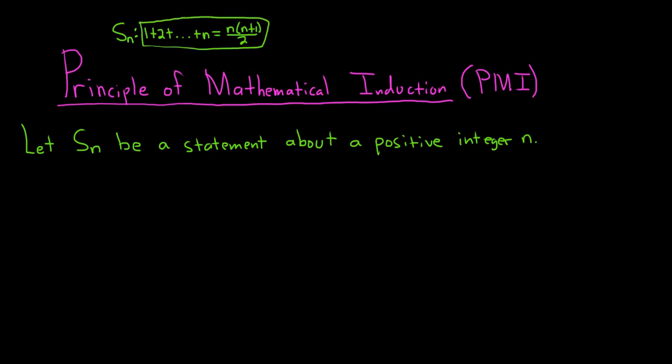So if you wanted to prove that the equation — the sum 1 plus 2 plus dot dot dot plus n equals n times n plus 1 over 2 — is true for all positive integers n, you would use this technique, the Principle of Mathematical Induction.